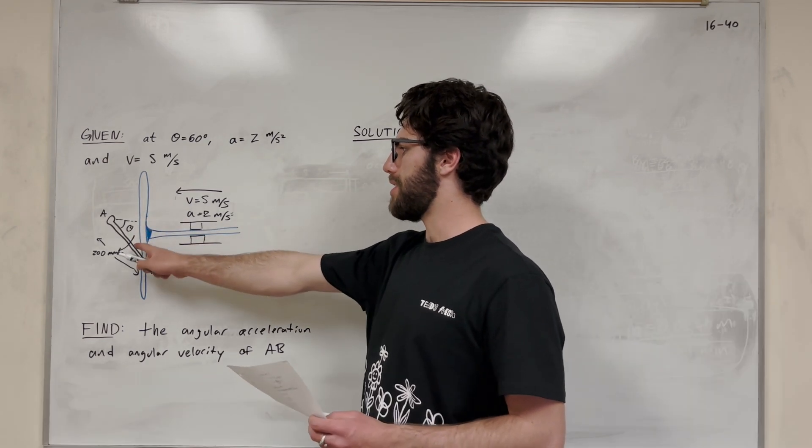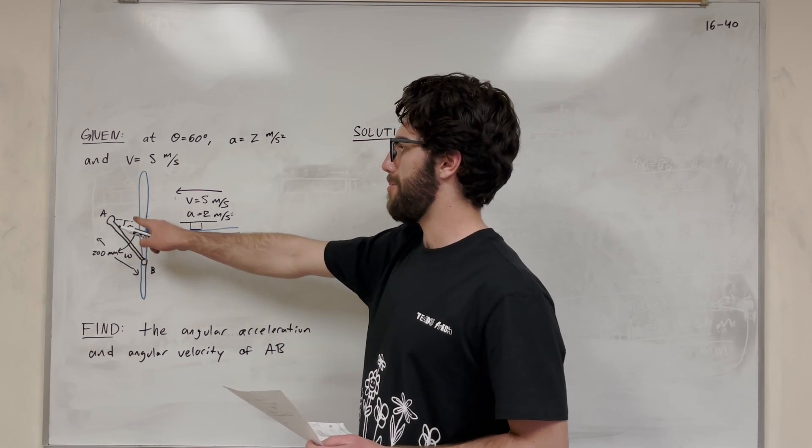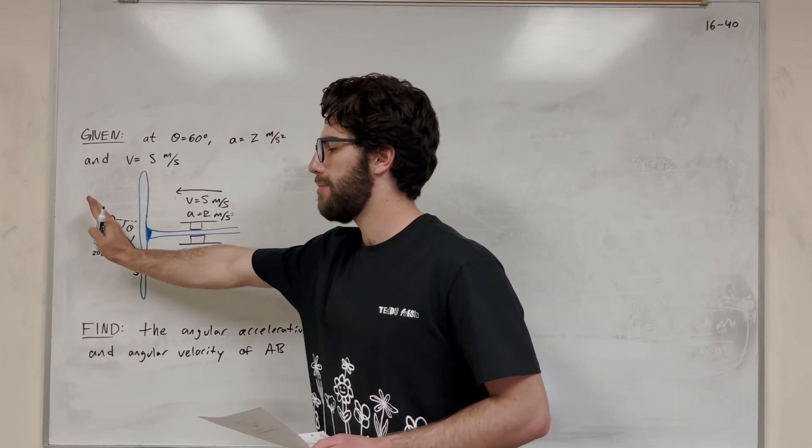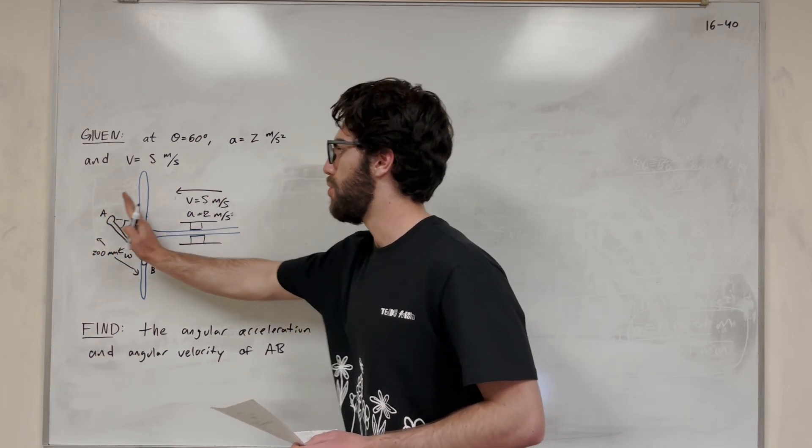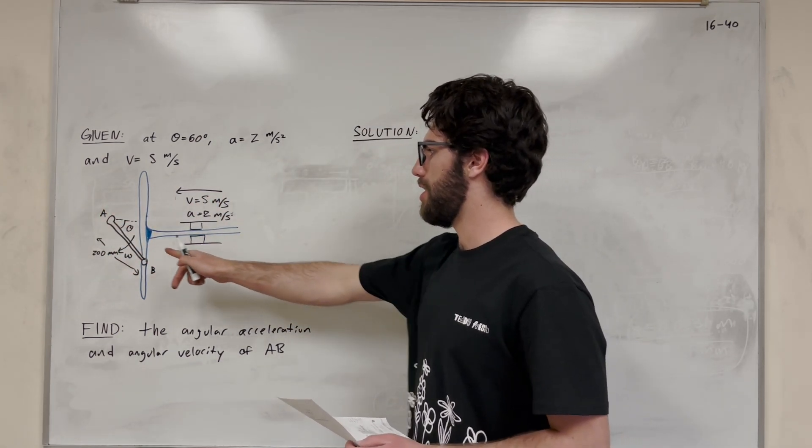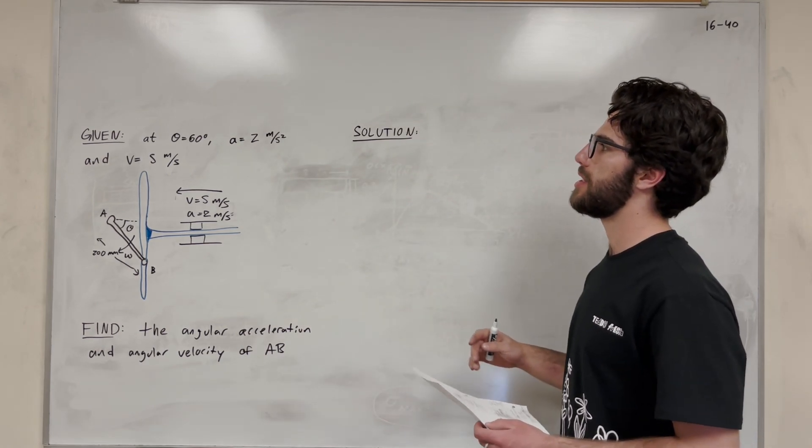And so what's happening is there's this little pin on B, and it can go up and down this. Rod AB is rotating this way. So this rotation is making this kind of action move, and it's going to move around. Our goal is to find the angular acceleration of AB and the angular velocity of AB at the moment theta is equal to 60 degrees.